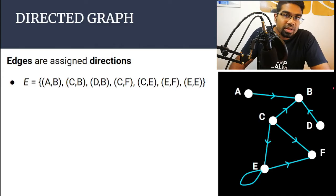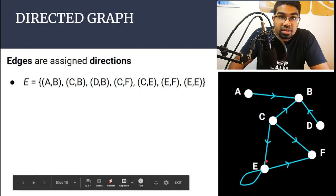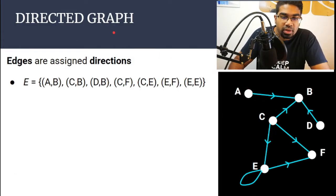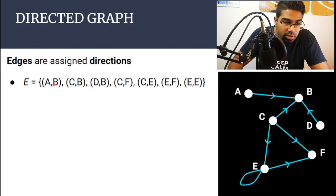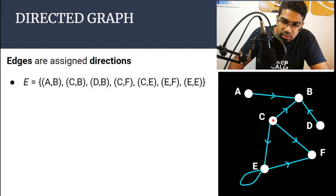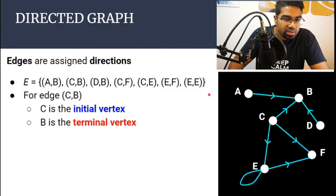Directed versus undirected. In a directed graph, edges are assigned directions — you can see there are arrows: from C to B, A to B, D to B. The edges in a directed graph are represented using set notation as ordered pairs of vertices. For example, (A, B) means the direction is from A to B, (C, B) means from C to B, and (D, B) means from D to B. For edge H with pair (C, B), C is known as the initial vertex where the edge starts, and B is the terminal vertex where it ends.